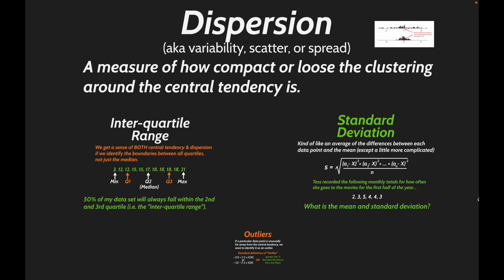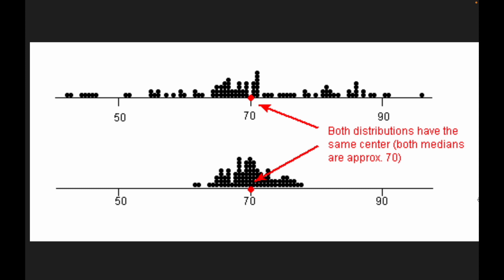This is what dispersion in descriptive statistics captures — also called variability, scatter, or spread. It measures how compact or loose the clustering around a central tendency is. For example, two data sets might both have a median of 70, but one is very tightly clustered around 70 while the other is spread out widely. We should be more confident that a particular data point is close to 70 in the tightly clustered set, where the central tendency is more representative of the whole group.